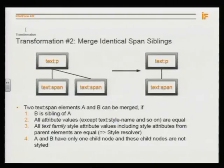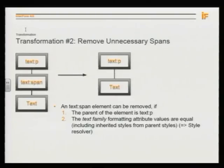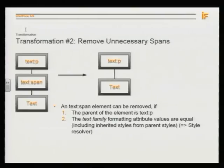An additional transformation is merging identical siblings — they are neighbors and you can merge them together. Another transformation: if you have a text span inside a paragraph and the formats are identical between the paragraph and the text span, you can remove that text span because it adds no additional information.